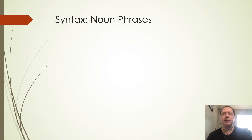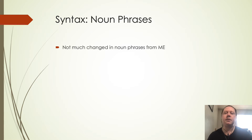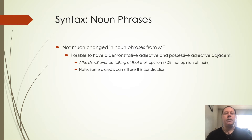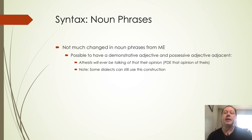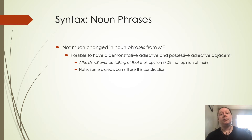Looking at noun phrases, there's not that much that's changed from the Middle English time period. We can still have a demonstrative adjective and possessive adjective next to nouns — so 'atheists will ever be talking of that their opinion.' This is something that some dialects can still use in present-day English, but in most dialects you would say 'that opinion of theirs' and put that into a prepositional phrase. This was still commonly seen in Early Modern English.